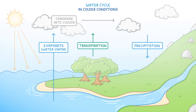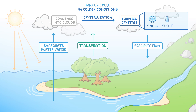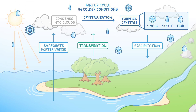In colder conditions though, water vapor in the atmosphere can also undergo crystallization, forming ice crystals that make up snow, sleet, or hail. This crystallization process is just another way that water changes form in the atmosphere before falling as precipitation.